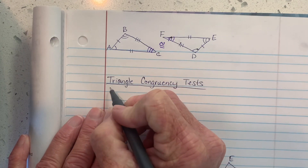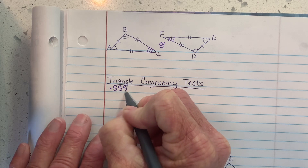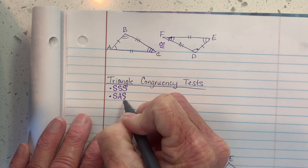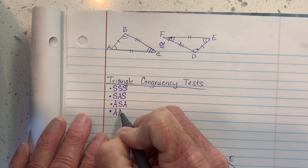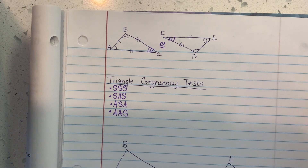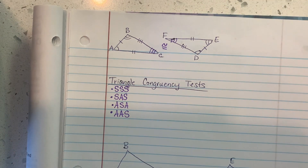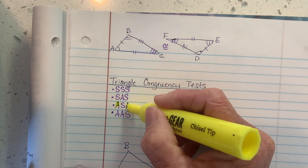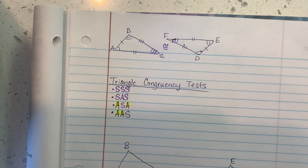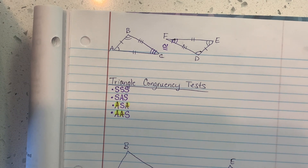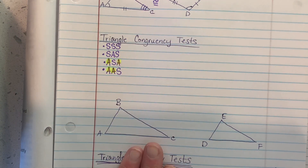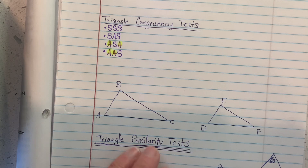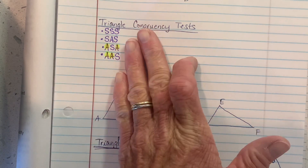Our four triangle congruency tests were side-side-side, side-angle-side, angle-side-angle, and angle-angle-side. I'd like to point out that both of the last two tests used two pairs of angles when looking at a shortcut for determining whether triangles are congruent. So you would expect there to be triangle similarity tests as well, and you would think they would be kind of similar to this.